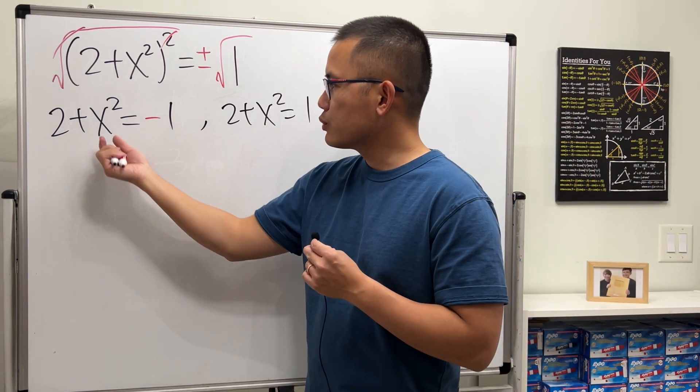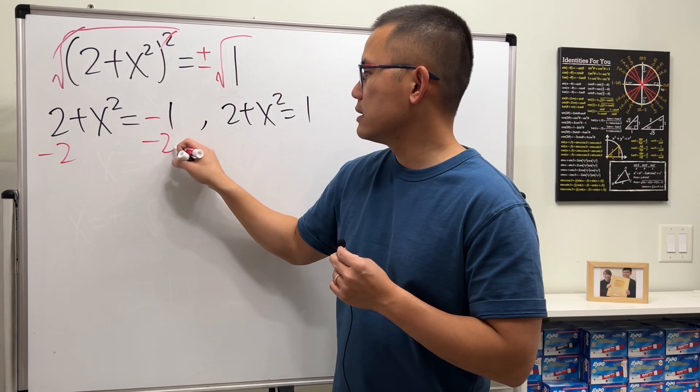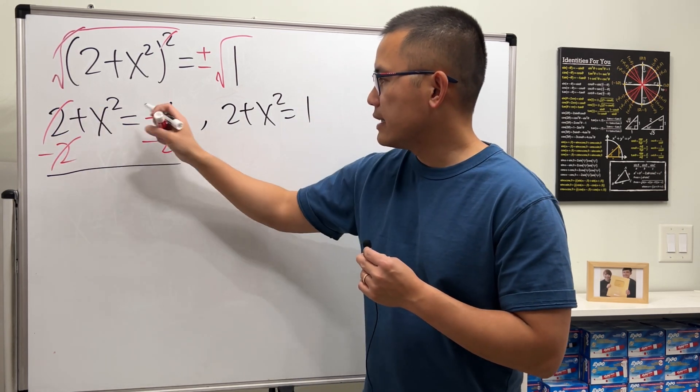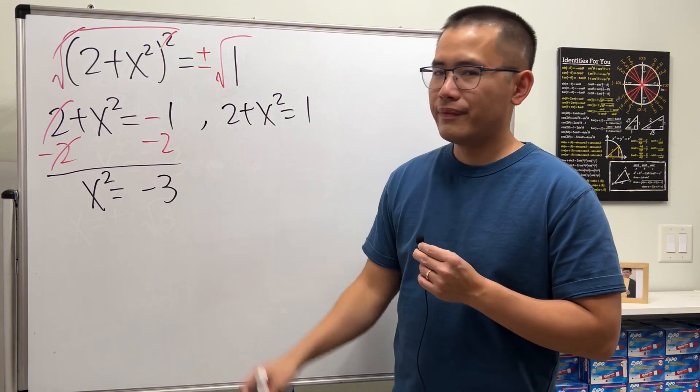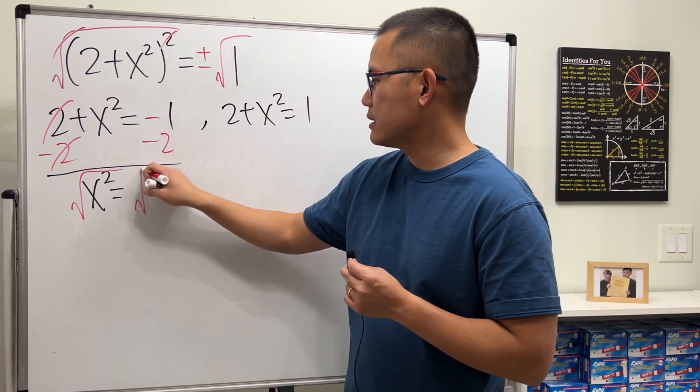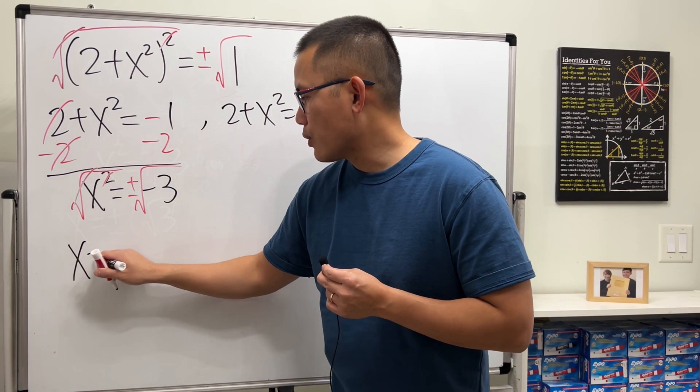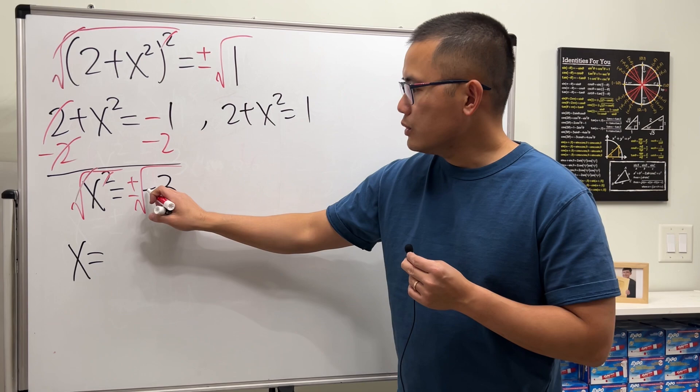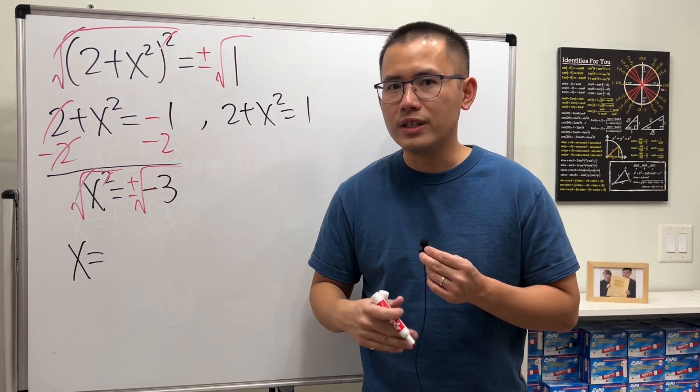Now from here, notice we just have x squared, so we can just minus 2 to both sides, and then we look at x² equals -3. And then take the square root on both sides. Plus minus cancel. Here we go: x equals—notice we have a negative inside the square root—that turns out to be the imaginary number i.